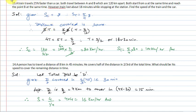Starting with question number 13 of exercise 3.5: A train travels 25% faster than a car. Both travel between points A and B, which are 120 kilometers apart. Both start from point A at the same time and reach point B at the same time. However, the train lost about 18 minutes while stopping at the station. Find the speed of the train and the car.